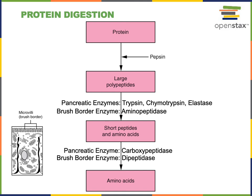Another brush border enzyme produced by enterocytes and embedded in the microvilli at the apical surface of an enterocyte is dipeptidase. Dipeptidase catalyzes hydrolysis of the peptide bond between the two amino acids in a dipeptide, producing two amino acids.